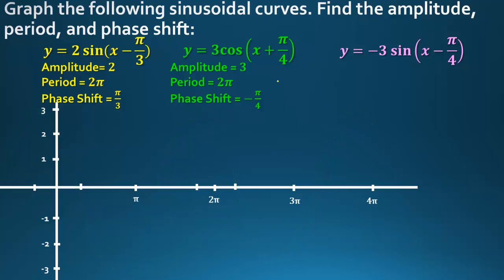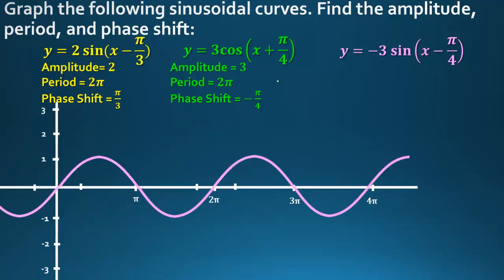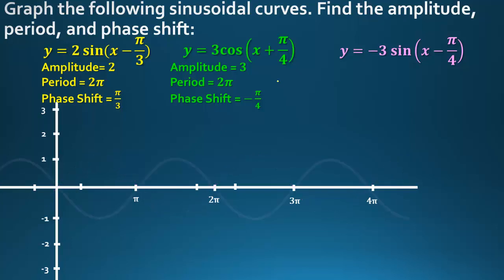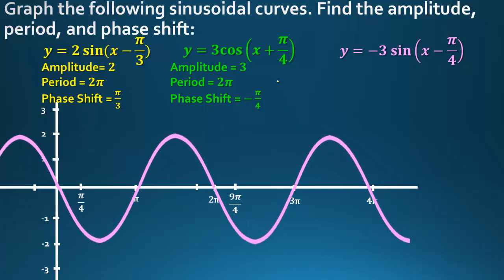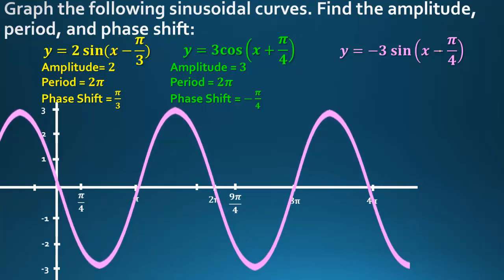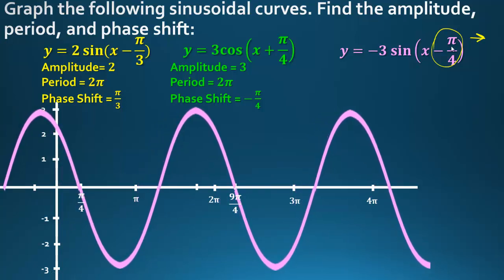For y = –3sin(x – π/4): the negative flips it, the 3 stretches it, and the minus π/4 shifts the graph right by π/4. Amplitude is 3, period is 2π, and phase shift is π/4.